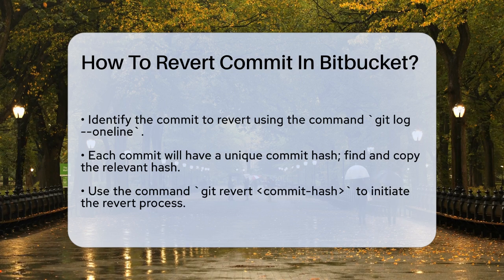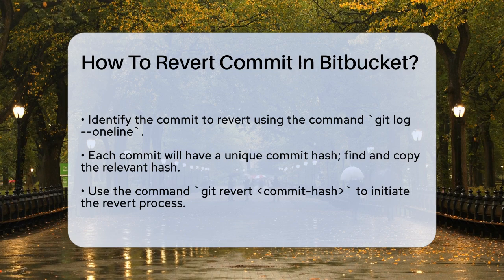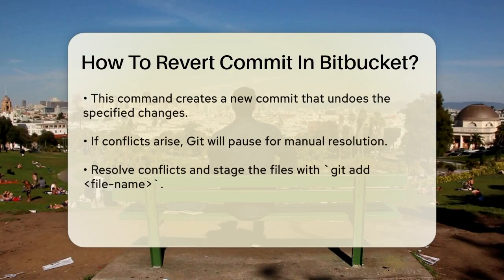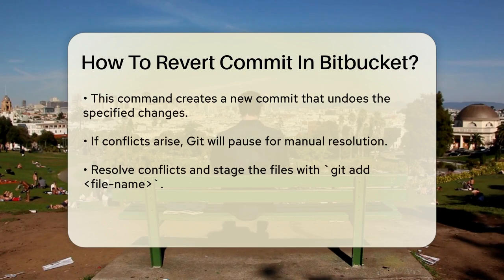Next, use the git revert command followed by the commit hash you copied. For example, if your commit hash is 4945db2, you would run: git revert 4945db2.